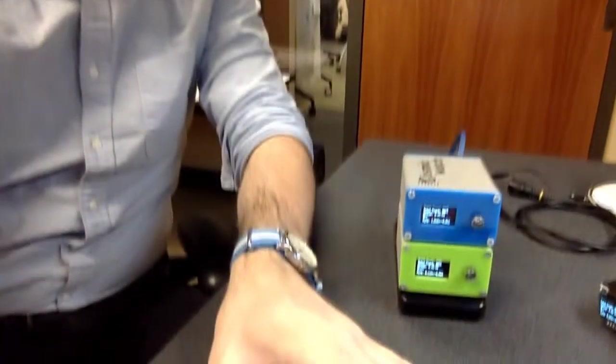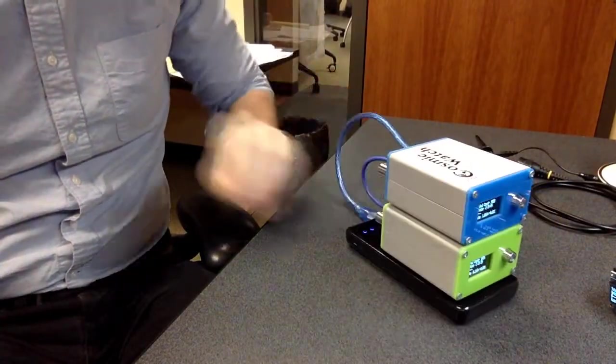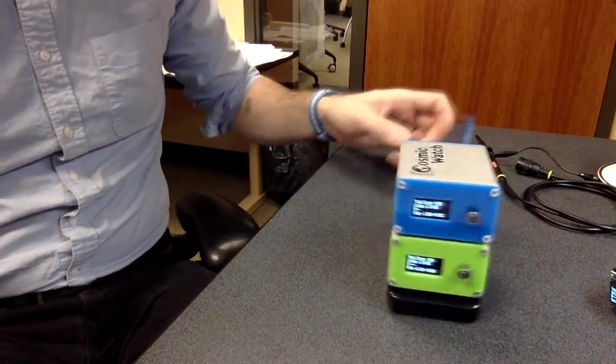But first, before we get into that, let me show you the measurement that we started on video number two. So the detector's plugged into this USB battery bank. They were just sitting downstairs in the parking garage on level 2P.